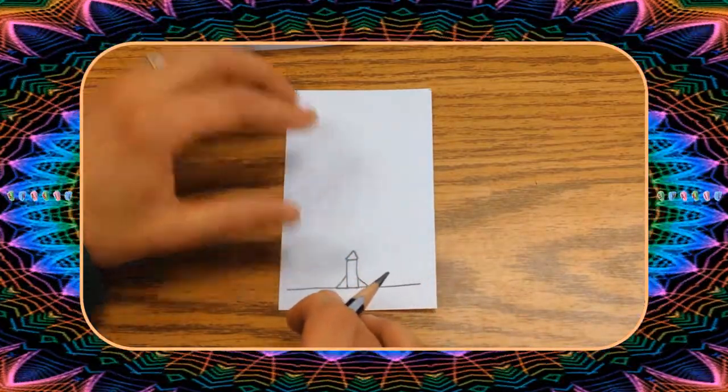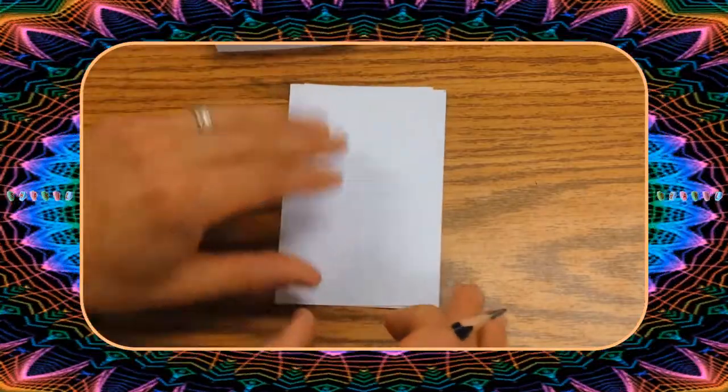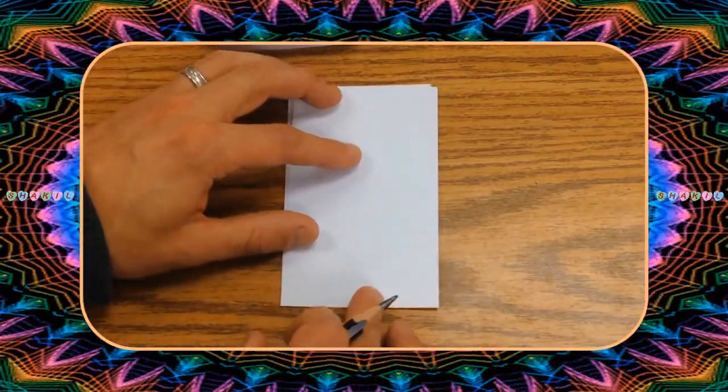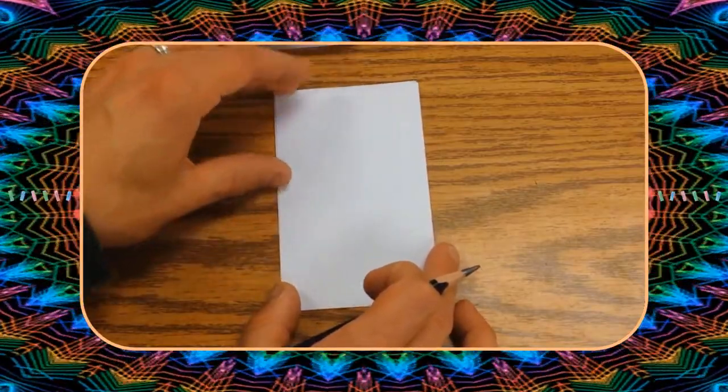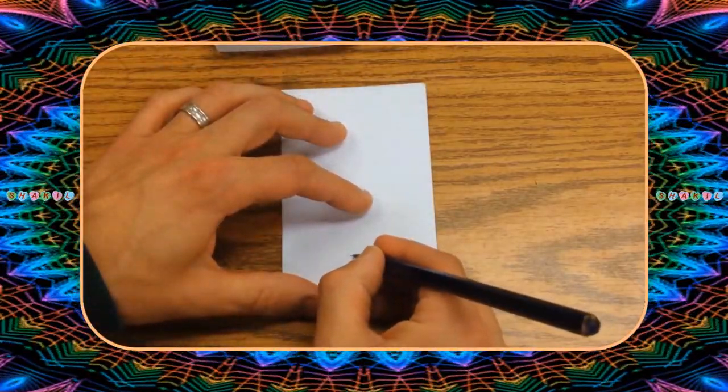Alright, so I have a little rocket that I'm going to draw. And I can basically press this down very faintly. You'll see the image beneath it so I can align and stuff.